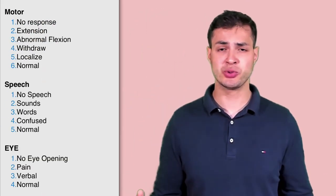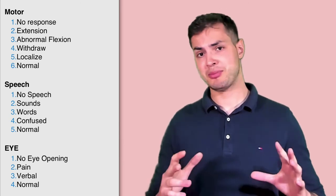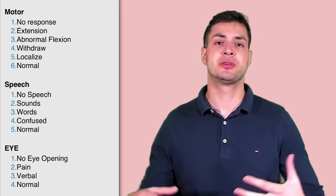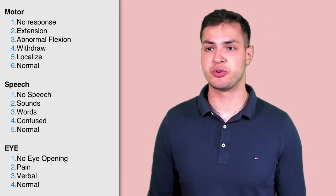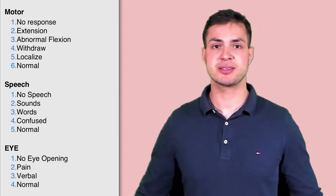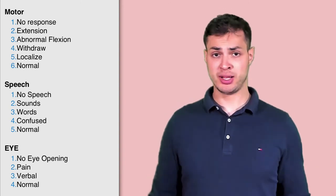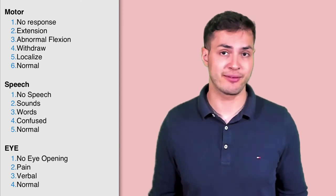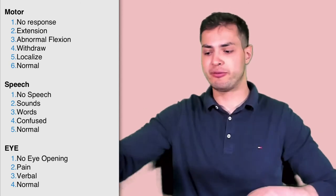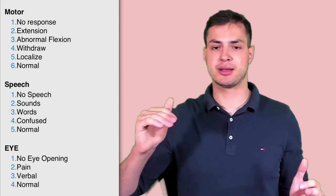Lastly, we'll cover the Glasgow Coma Scale, which is very important and commonly tested in finals and medical school exams. It consists of three scores: motor, verbal, and eyes. A helpful memory trick: you only have two eyes, two times two is four, so the eye score is out of four. The minimum GCS is three — one point each if the patient doesn't open their eyes, doesn't speak, and doesn't move in response to pain. Maximum scores: four for spontaneous eye opening, five for spontaneous speech, and six for obeying commands.